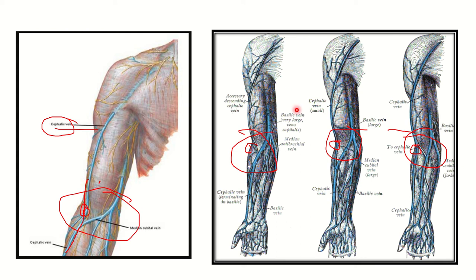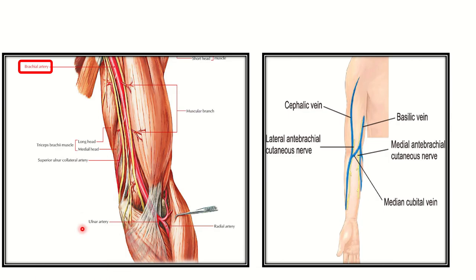We can see a whitish structure around the muscles — this is the deep fascia. Just below the cephalic vein or superficial vein, there is a whitish structure, and this is the deep fascia. The cephalic vein lies outside the deep fascia, while the brachial artery lies below the deep fascia. We need to find the structure that separates the cephalic vein from the brachial artery.